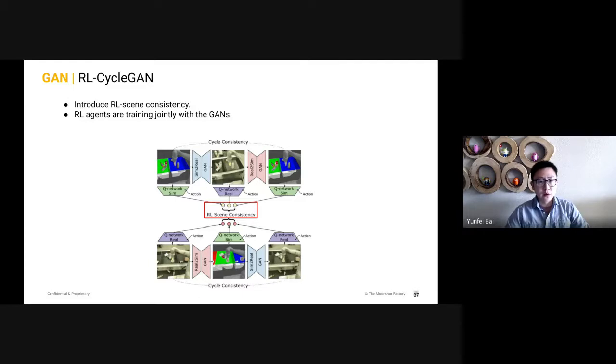To dive a little bit deeper, first, we introduce a RL-sim consistency loss. Here, GANs are constrained such that the RL agents act consistently across adapted image and the original image. RL agents are trained jointly with GANs. Since visual features for grasping simulation and reality may differ drastically, we train two different Q networks. So how well does it work?